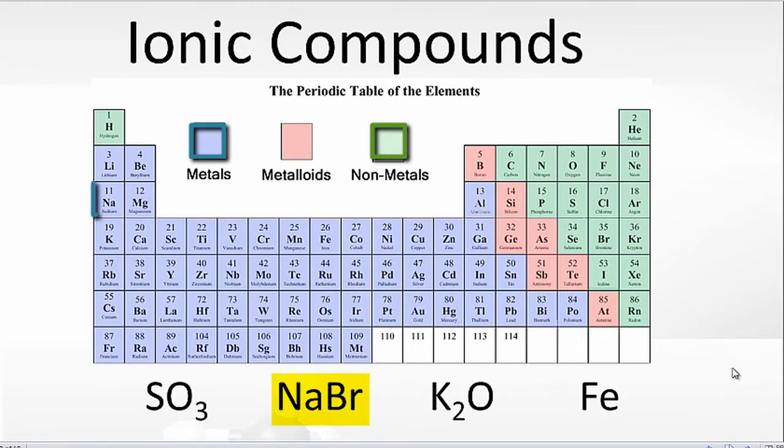For NaBr, Na is a metal, and then Br, that's a non-metal. Metal plus non-metal, that is an ionic compound, and it has ionic bonds.